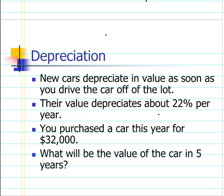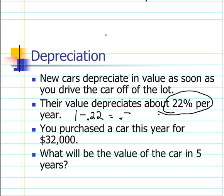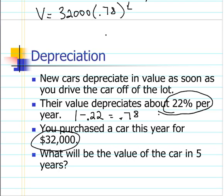Now let's look at an exponential decay situation. Things that you buy, like cars, lose value as you own them — the older they get, the less they're worth. So that's a value decay. Here we have a percent decrease, so our value for b is 0.78. Our a is 32,000, so our model for the value of the car will be 32,000 times 0.78 to the t, where t is the age of the car.